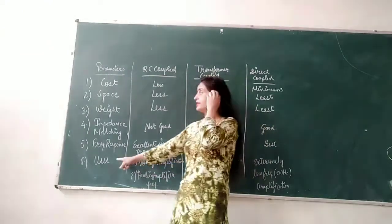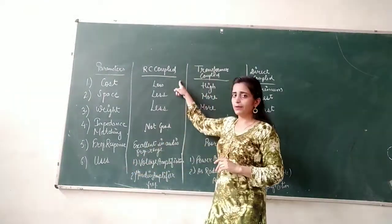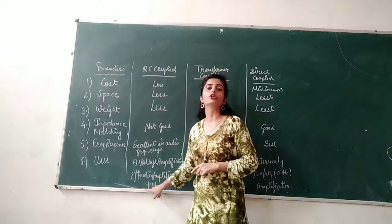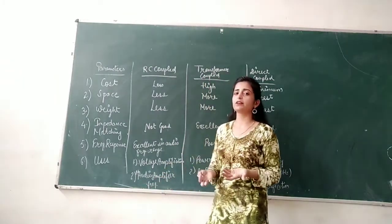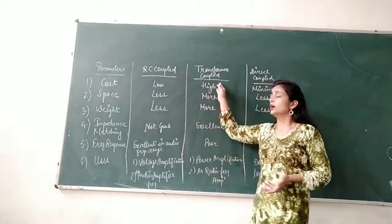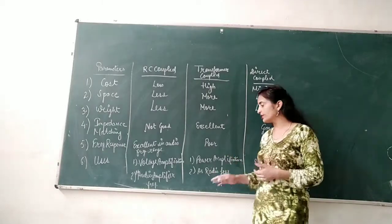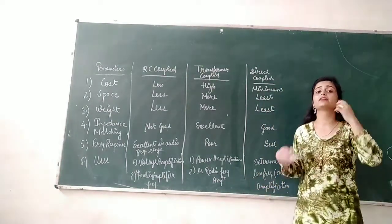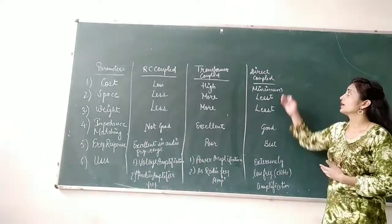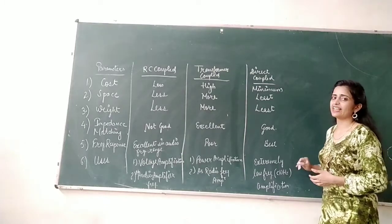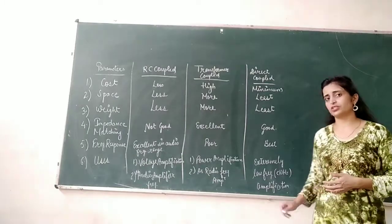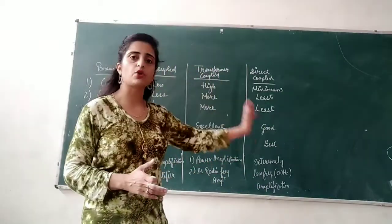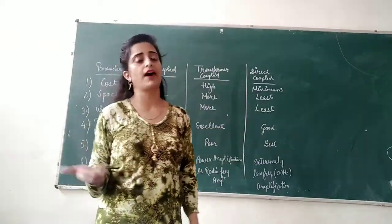Regarding uses: the RC coupled amplifier is used for voltage amplification and as an audio frequency amplifier to amplify audio frequency signals. The transformer coupled amplifier is used as a power amplifier and as a radio frequency amplifier to amplify signals in the radio frequency range. The direct coupled amplifier is used only for extremely low frequency amplification, in the range of less than 10 hertz. This covers all three types of multi-stage amplifiers.